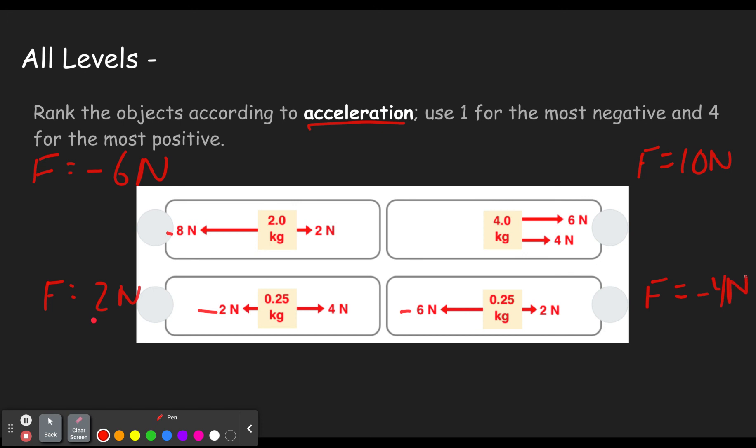Okay. So ranking them in terms of net force, by the way, this is the same one we just did. We would have seen this one be one, two, three, and four. But acceleration is force divided by mass.